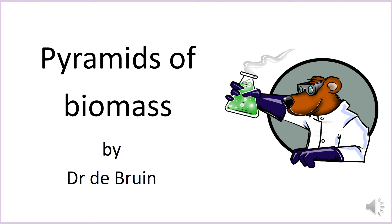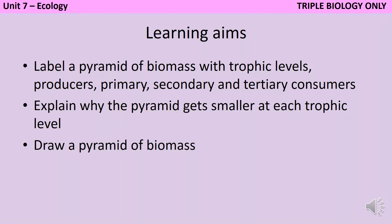This is a video for GCSE Biology about pyramids of biomass. By the end of this video you should be able to label a pyramid of biomass with the trophic levels, including producers, primary consumers, secondary consumers, and tertiary consumers. You should be able to explain why the pyramid gets smaller at each trophic level, and finally you should be able to complete calculations and draw a pyramid of biomass yourself.